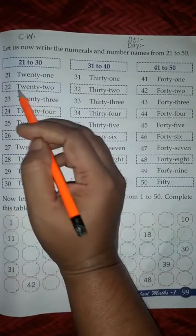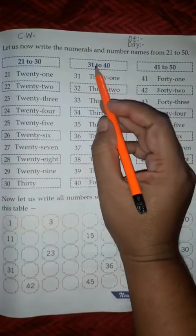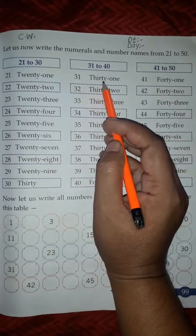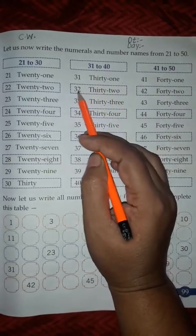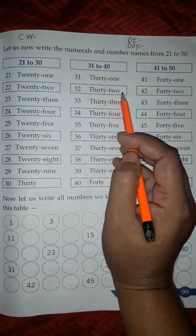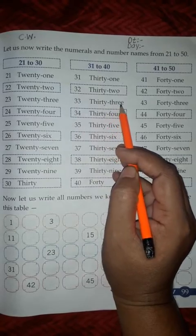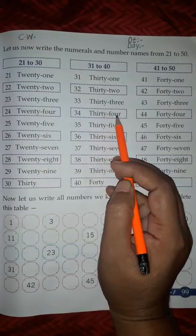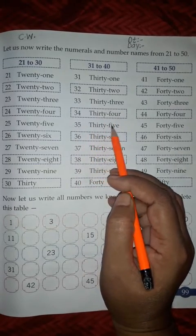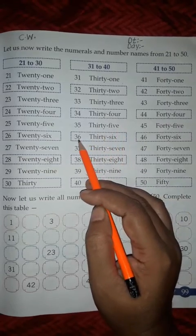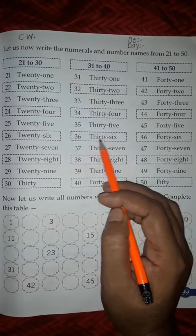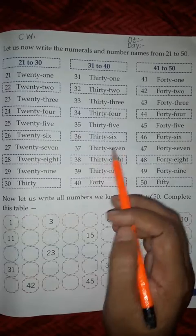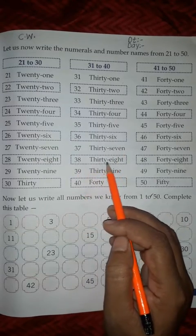31. THIRTY-ONE. 32. THIRTY-TWO. 33. THIRTY-THREE. 34. THIRTY-FOUR. 35. THIRTY-FIVE. 36. THIRTY-SIX. 37. THIRTY-SEVEN. 38. THIRTY-EIGHT.